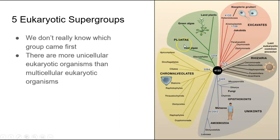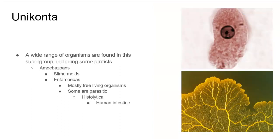We have the plantae supergroup, which includes plants of course but also some algae. Then we have chromalveolates, the uniconta, rhizaria, and excavate. What's interesting about these five supergroups is that you will find protists in all of them — and that's why it's not such a good idea to put all protists in the same category. The first supergroup is uniconta, and this is the supergroup where you're going to find fungi, animals, a very wide variety of organisms, and some protists.